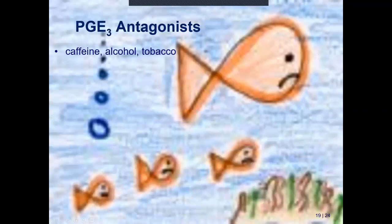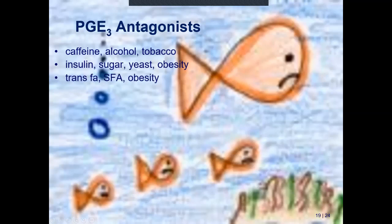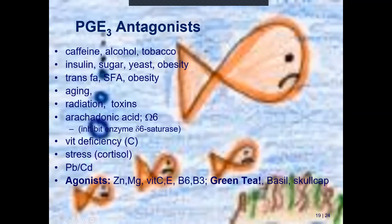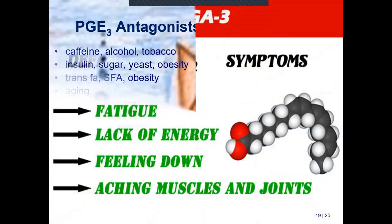Antagonists that block prostaglandin Group 3 (the good omega-3 prostaglandins) include caffeine, alcohol, tobacco, sugar/yeast, insulin dysfunction, obesity, trans fats, processed food, animal products, vitamin deficiencies (especially C), stress, heavy metals, and radiation. Agonists — things that support healthy prostaglandin balance — include green tea and various herbs. These are great topics to research.